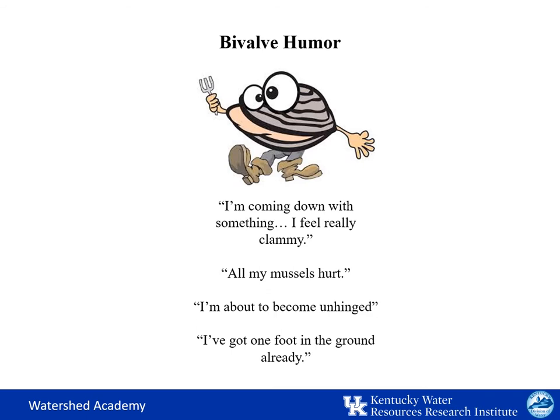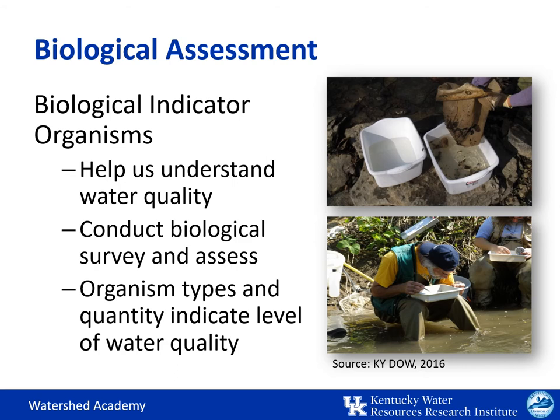When we look at human communities such as cities or workplaces, we regularly see new rankings looking at different indicators in the community to evaluate whether it's healthy or not. The same approach can be used with the biological community. Biological indicator organisms are used to help scientists understand what's impacting the stream during times when scientists are not there to observe or take measurements. This helps get a better understanding of water quality by conducting a biological survey and assessment, then looking at the different organism types, quantity, and ratios to indicate how they relate to different water quality impacts.